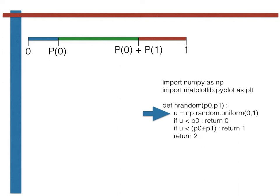The second line then checks if u is less than P0, and thus in the blue segment of the line shown up here. If u is less than P0, execution of the function stops at this point, and the function returns a value of 0.